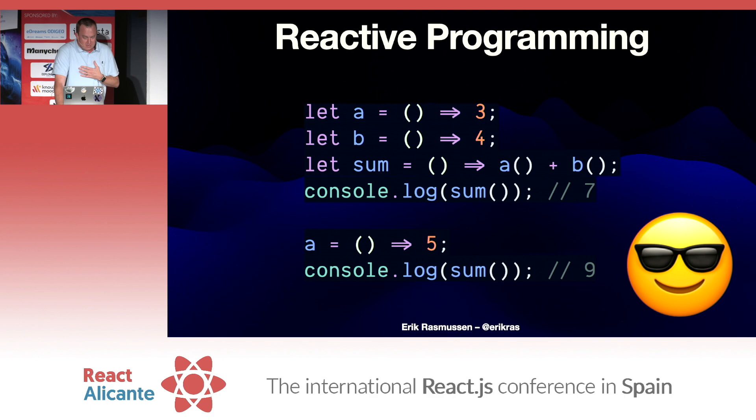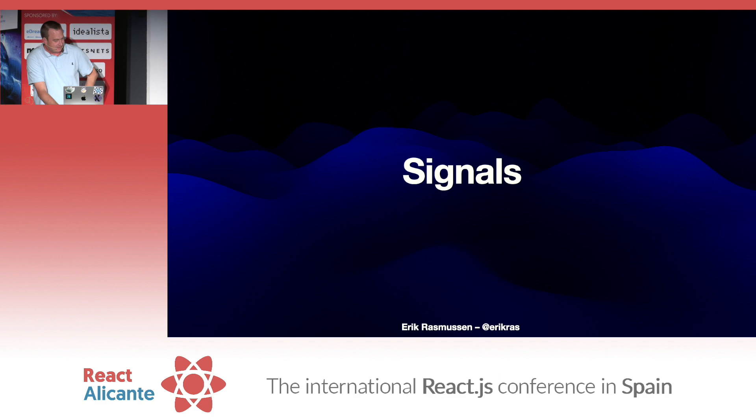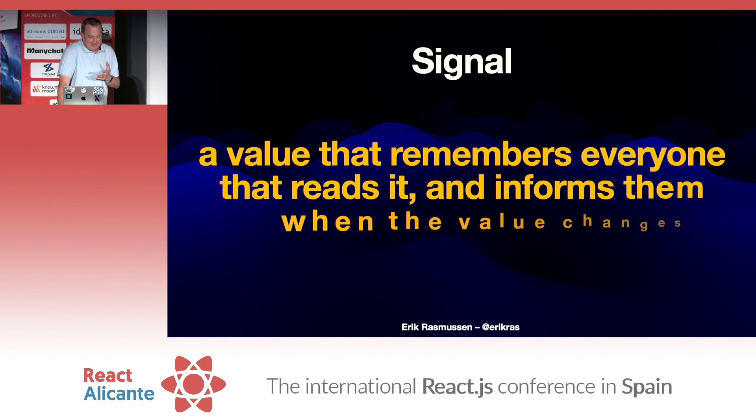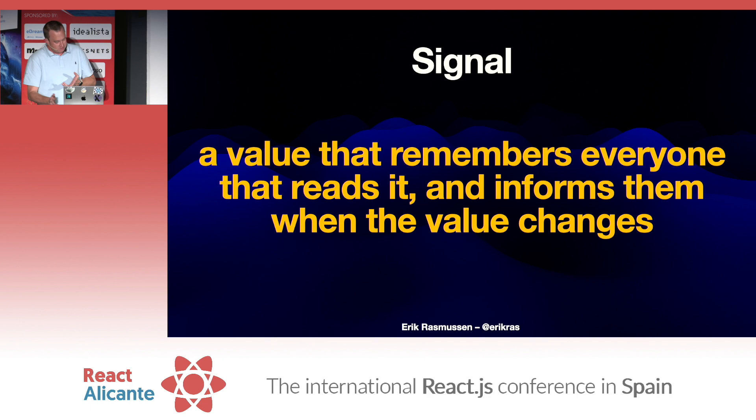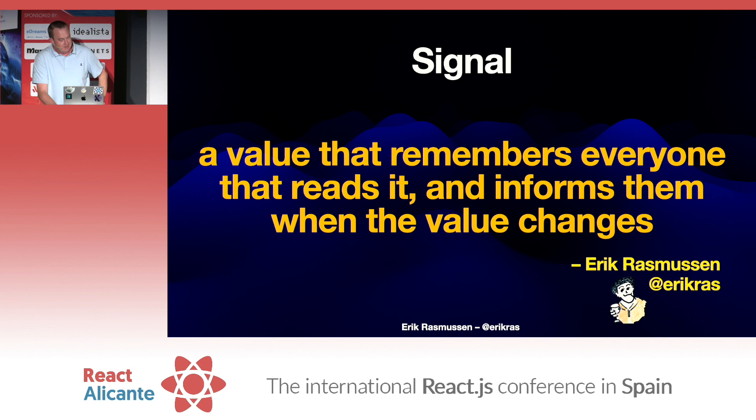So how do we go from this to data that emits its own events? That's where we get to this lovely word that's been flying around everywhere this year: signals. A signal is a value that remembers everyone that reads it and then informs them when the value changes.